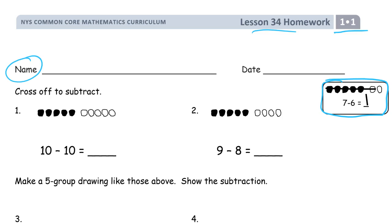In the first ones, the five-group drawings are made for us, but we're going to have to draw our own later on. Cross off to subtract. We start with 10, and this is subtraction — that's how much we're going to cross out. We start with 10 and we're going to cross out 10. So how many are left not crossed out? Zero. They're all crossed out.